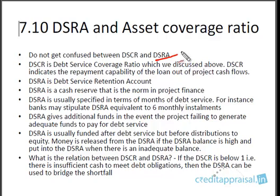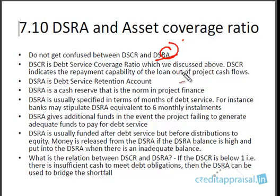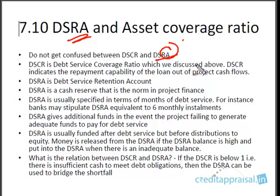DSRA is the Debt Service Retention Account. In project finance, cash flows are uncertain — there is no guarantee that cash flows will be generated as per the company's projections. From a banker's perspective, you need a certain amount of protection so that in case cash flows don't materialize, repayment is not affected. DSRA is stipulated by banks only in very large projects — maybe 50 crores or 100 crores — not in normal term loans up to 5 or 10 crores.